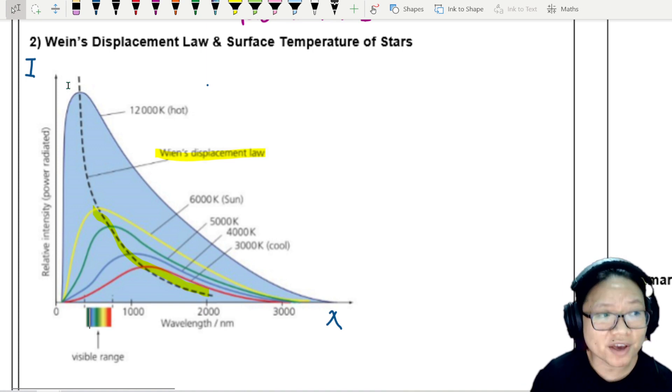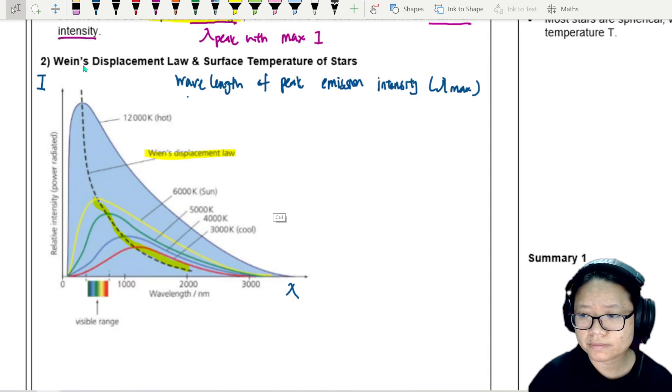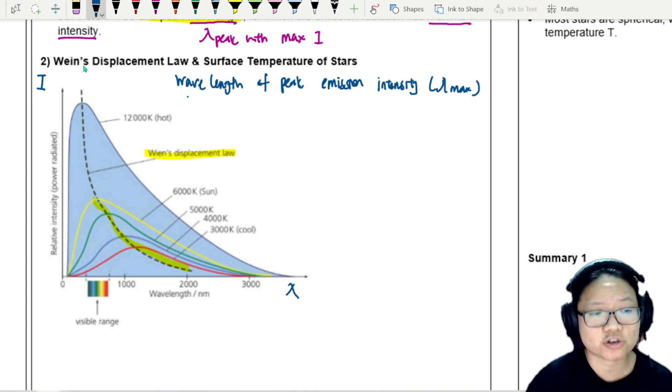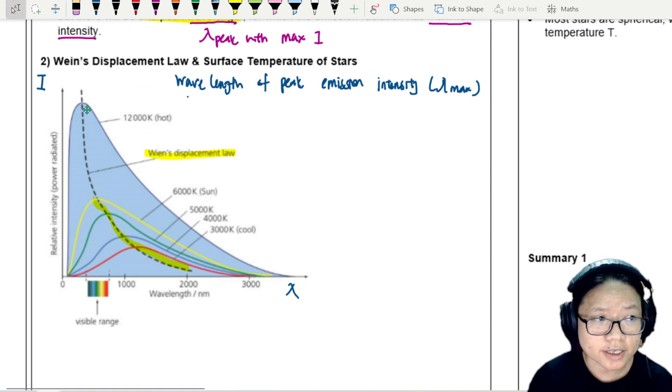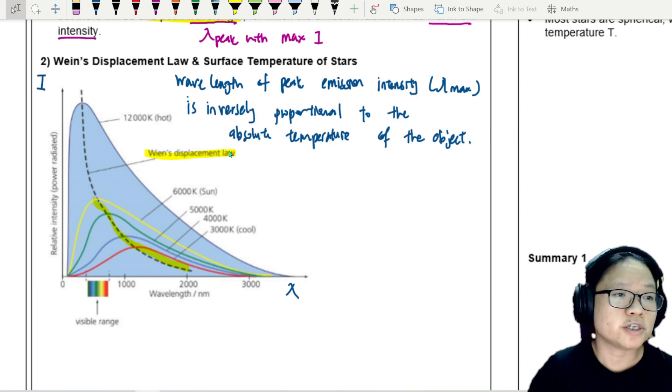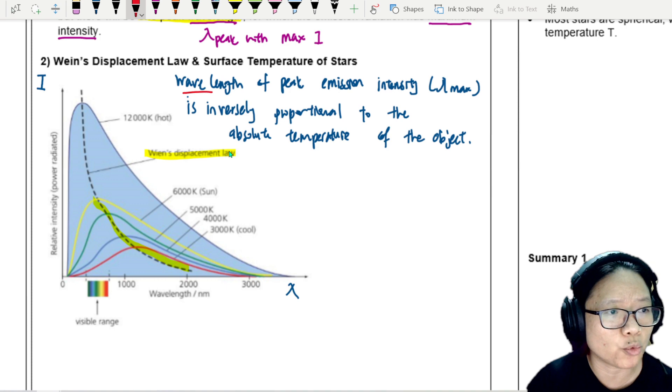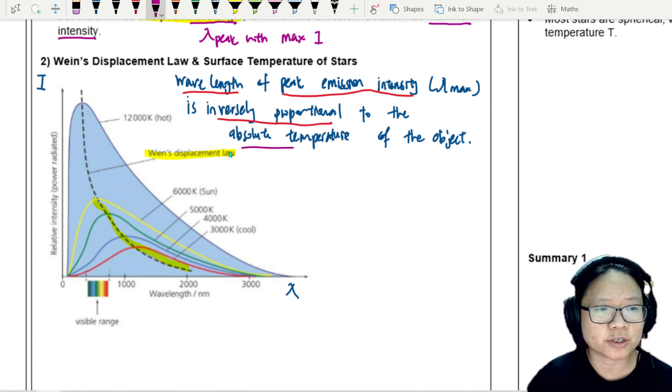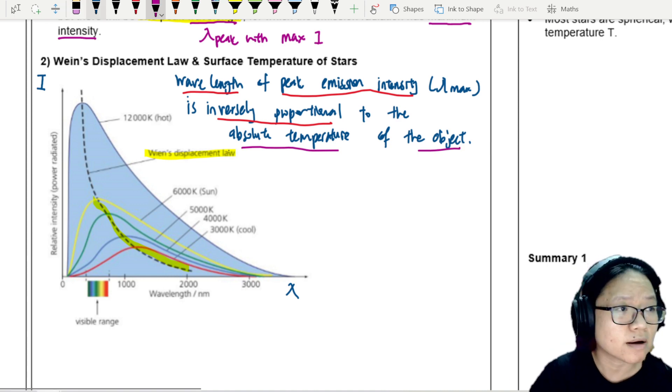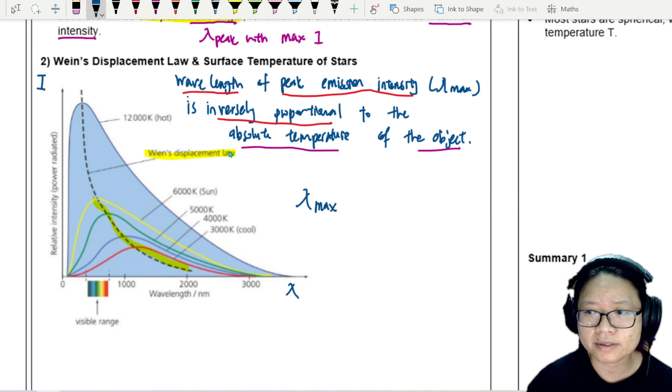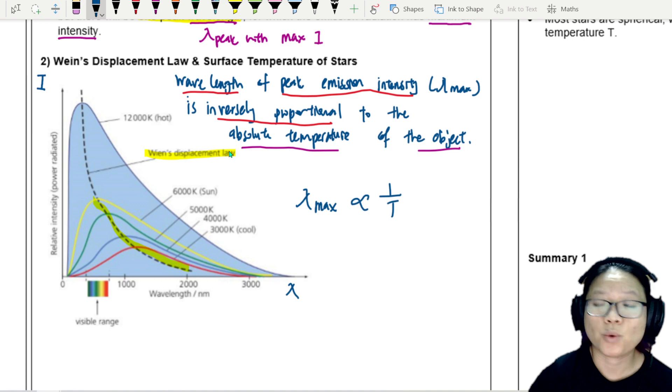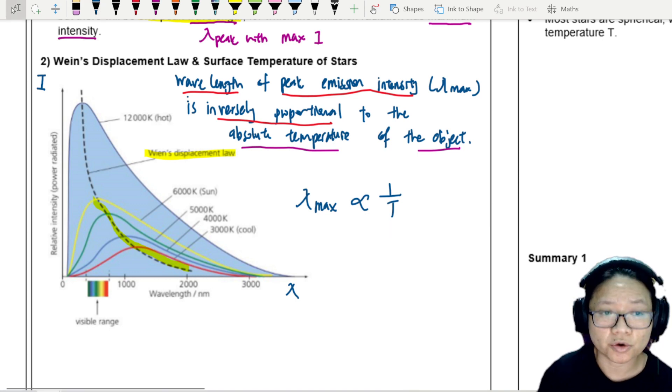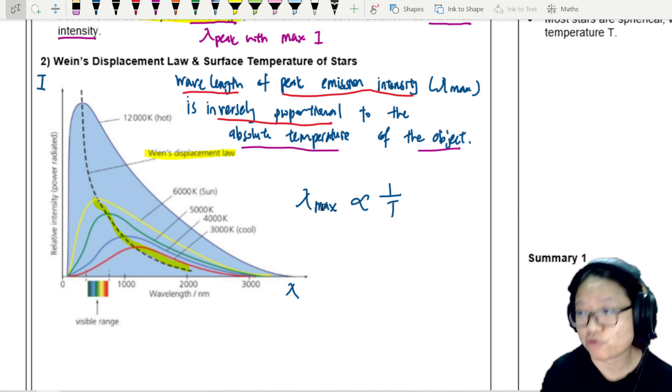So I'm going to write that down, where the wavelength of the maximum or the peak emission, wavelength of peak emission intensity, we like to call it lambda max. And this lambda max is inversely proportional to temperature. So the hotter it is, the smaller the wavelength. So this is your Wien's displacement law. A few key terms: we are talking about wavelength of peak emission intensity. It's inversely proportional to the absolute temperature of the object. In this case, the object is the star. So writing this into a formula shows us that lambda max is inversely proportional, so 1 over T, where T is the absolute temperature, meaning it will be in Kelvin.